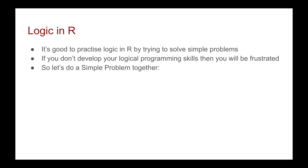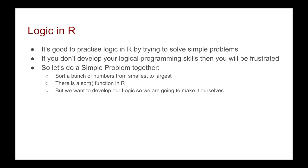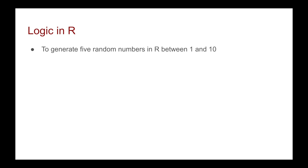Let's sort a bunch of numbers from smallest to largest. Yes, there is the built-in sort function in R, but we want to develop our logic, so we're going to try and make it ourselves. The first thing we need to do is generate five random numbers in R — let's say between 1 and 10. We can use the following code: my_numbers is equal to sample from 1 to 10, and we want five numbers. This will return us a vector of 5, 10, 4,